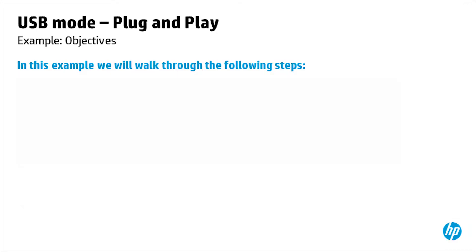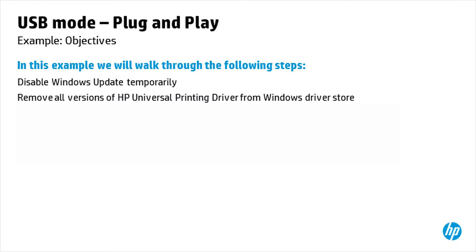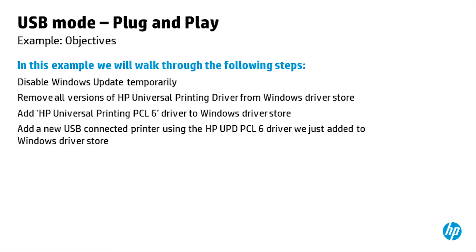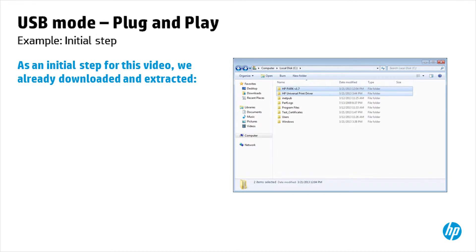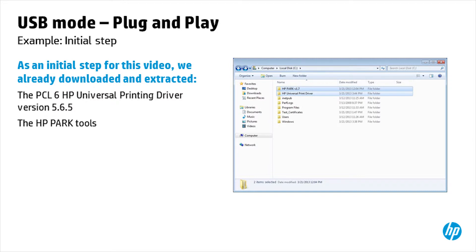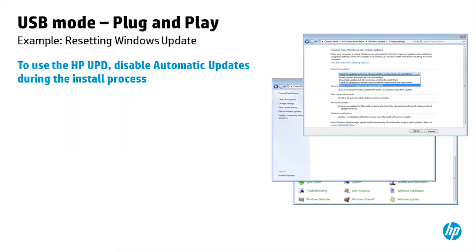In this example, we will walk through the following steps: disable Windows Update temporarily, remove all versions of HP Universal Printing Driver from Windows Driver Store, add HP Universal Printing PCL6 Driver to Windows Driver Store, and add a new USB connected printer using the HP UPD PCL6 Driver we just added to the Windows Driver Store. As an initial step, we already downloaded and extracted the PCL6 HP Universal Printing Driver version 5.6.5 and the HP Park Tools from www.hp.com.